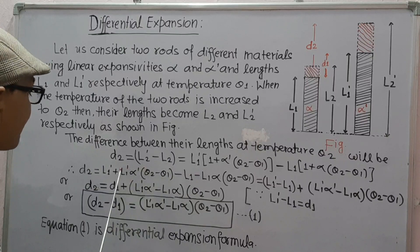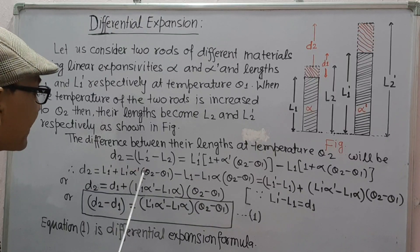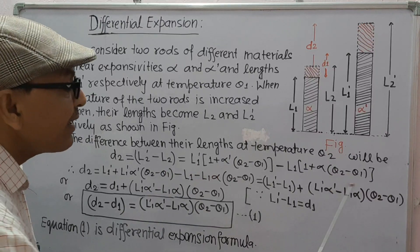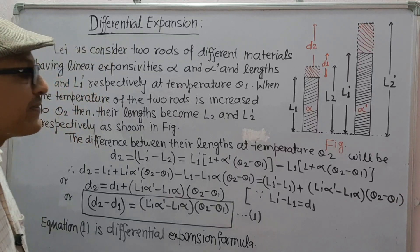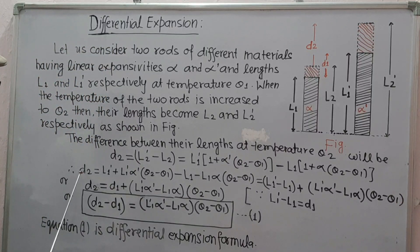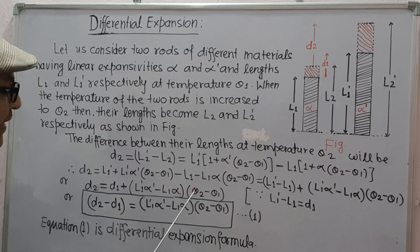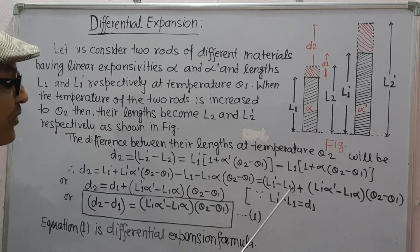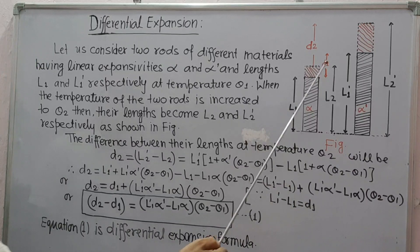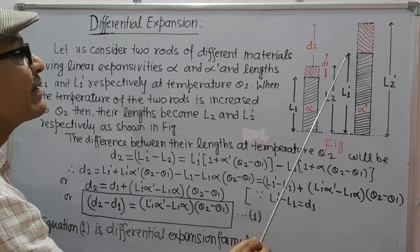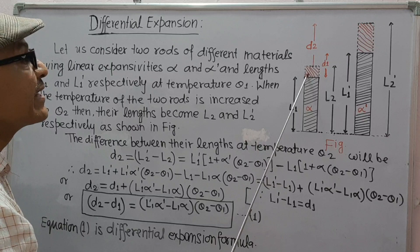Rewriting and taking (theta 2 minus theta 1) common, we get D2 is equal to (L1 dash minus L1) plus (L1 dash alpha dash minus L1 alpha) times (theta 2 minus theta 1). Here, L1 dash minus L1 is the difference of their initial lengths at temperature theta 1.